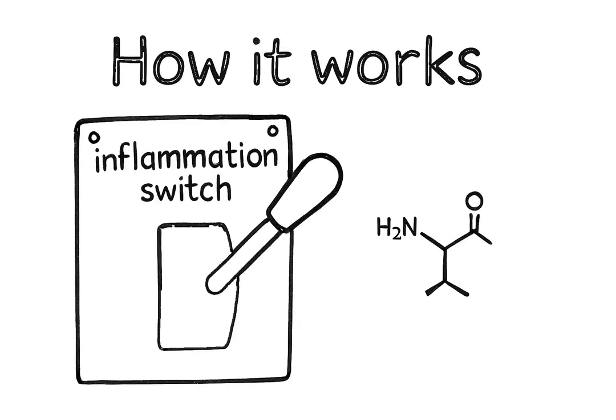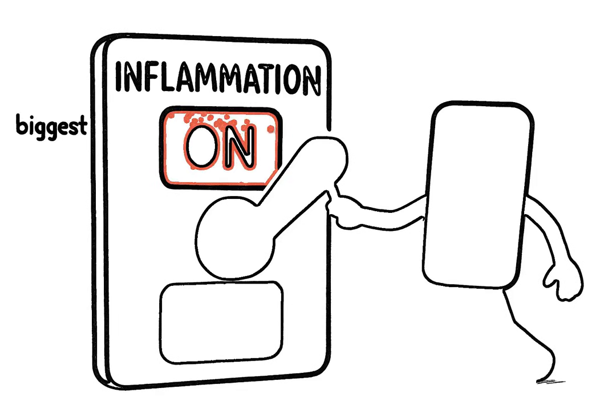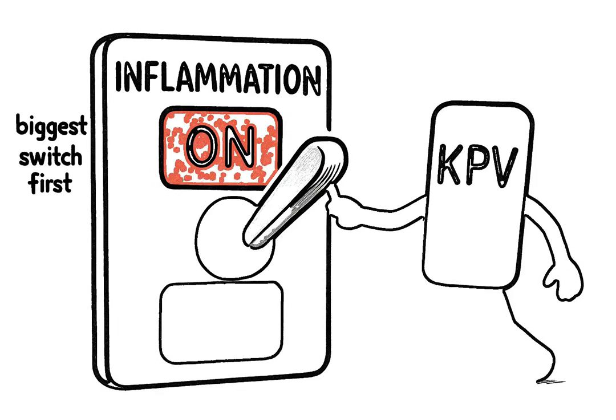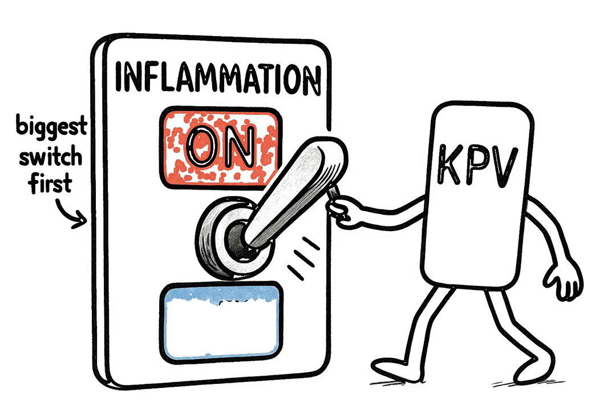Now, how does it actually work? Your body has internal switches that turn inflammation on and off. KPV's main job is to find the inflammation switch when it gets too strong and firmly turn it off. Let's break down how it does that, starting with the biggest switch of all.